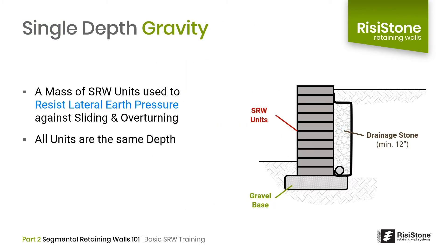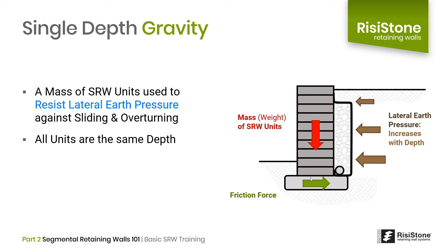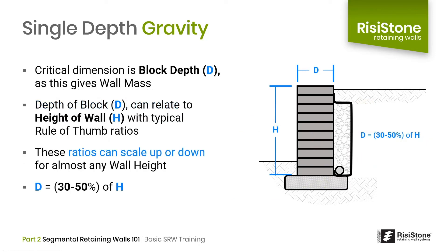Similar to the previous examples, a segmental retaining wall is basically a type of gravity wall that creates a mass through the self-weight of the SRW units themselves, or combines with other elements such as reinforcements or tiebacks to create greater depth when mass is needed. In its simplest form, the SRW units are stacked on a gravel base with a drainage layer behind them — this is called a single-depth gravity SRW. The mass of the SRW units creates a friction force along the base, which resists the lateral earth pressure from the adjacent soil. Since we are relying only on the weight of the units, the critical dimension is the depth of the units, shown as d, which gives the wall its mass.